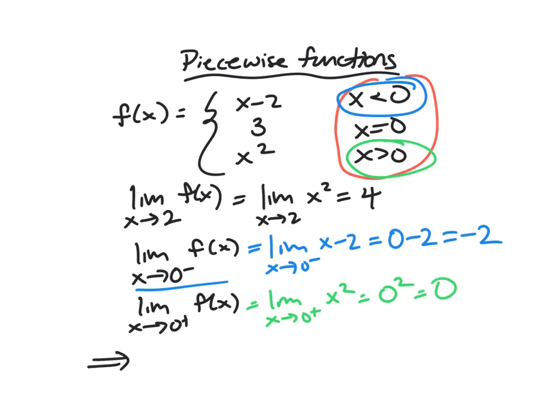And so we end up concluding here that these pieces don't meet up at zero. You're going to have a jump involved there. And so the limit as X approaches zero of f(X) does not exist.